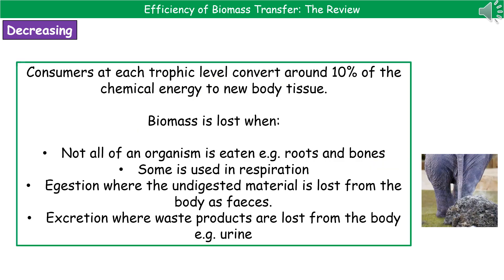This energy transfer through a food chain is not a very efficient process. Consumers at each trophic level only convert around 10% of the chemical energy into new body tissue for themselves. The rest of it is lost through those processes we've just mentioned.